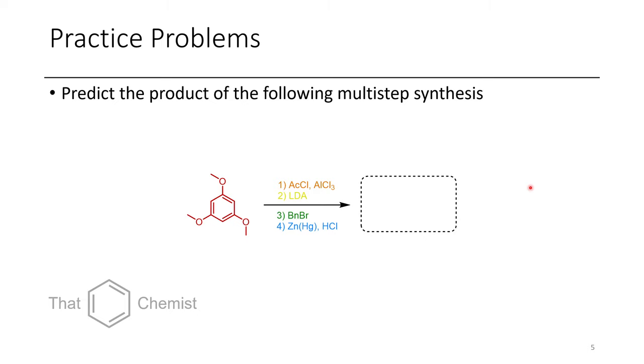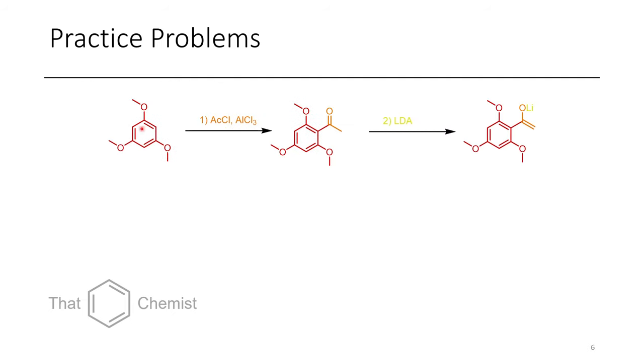In the next problem, what we do is we have a multi-step synthesis. Initially, this 1,3,5-trimethoxybenzene would react with acetyl chloride in the presence of aluminum trichloride, giving us this acetophenone product.